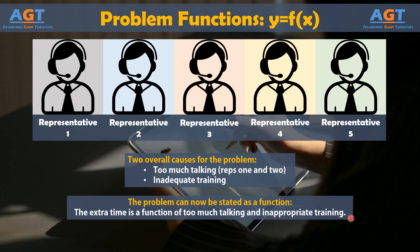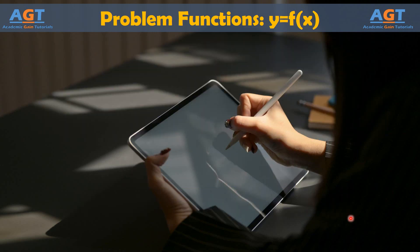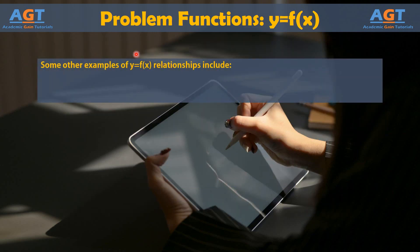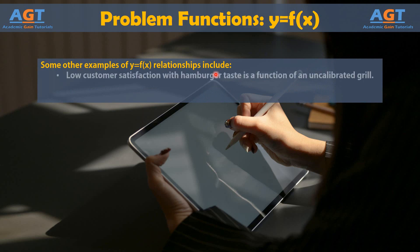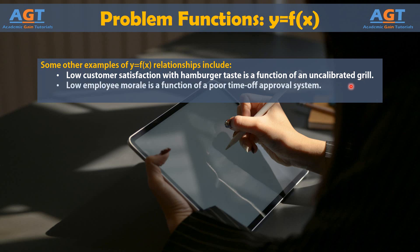The example is simple, but it illustrates the basic concept of defining a y = f(x) relationship for a problem and its causes. It's not always so easy to conduct the research and analysis to find the relationship, but the relationship is always present. Some other examples of y = f(x) relationships include: low customer satisfaction with hamburger taste is a function of an uncalibrated grill; low employee morale is a function of a poor time-off approval system; and customer wait times are a function of technology distractions for employees.